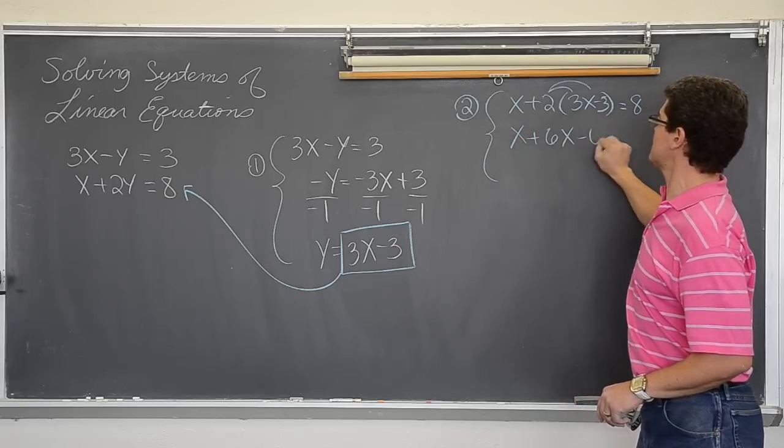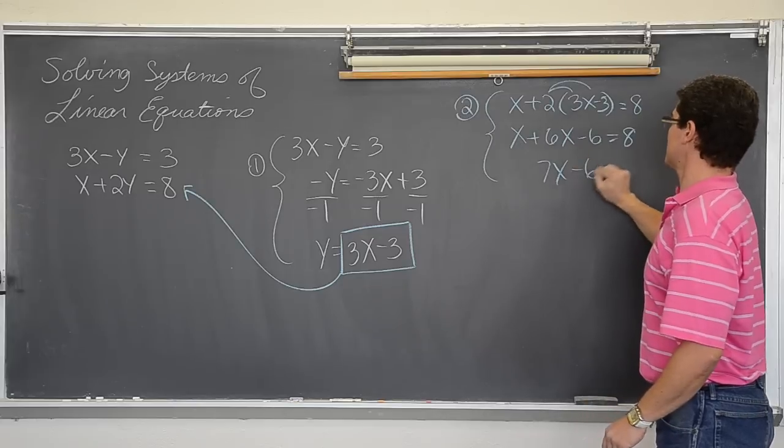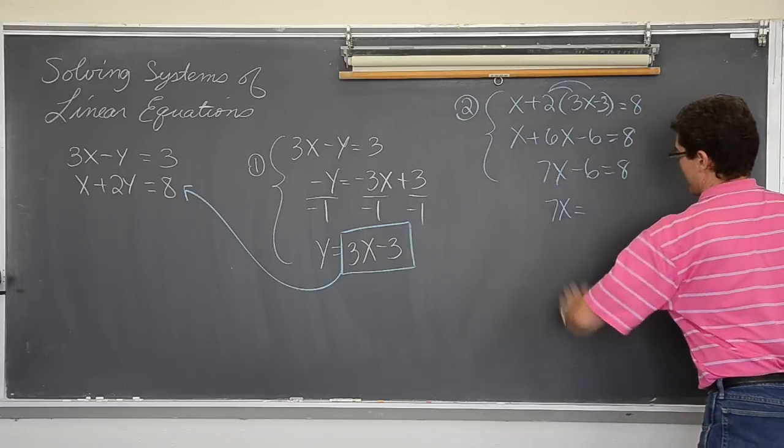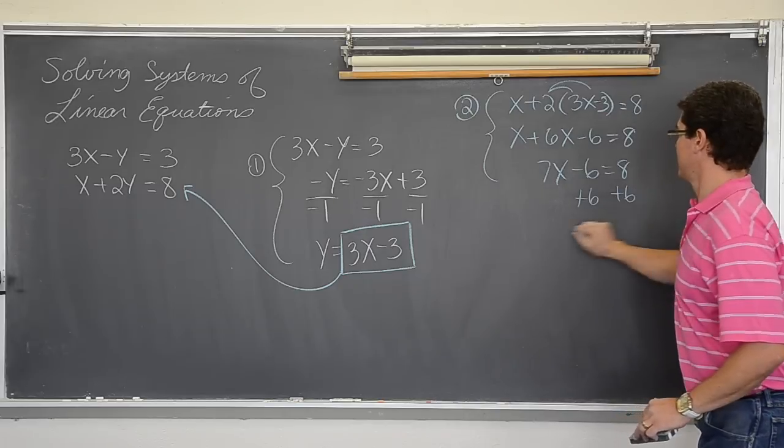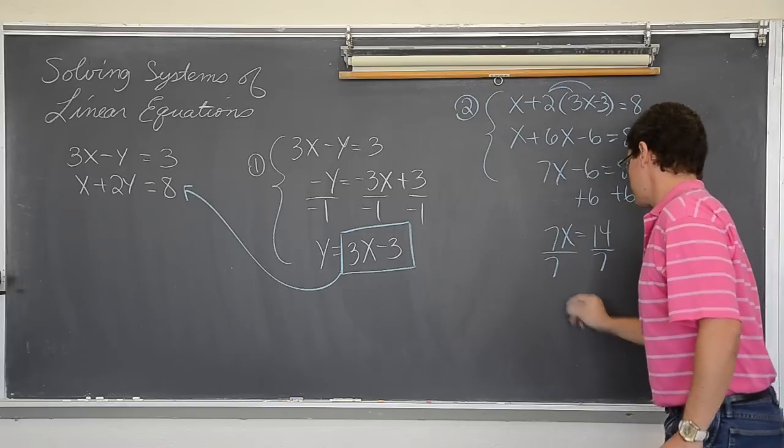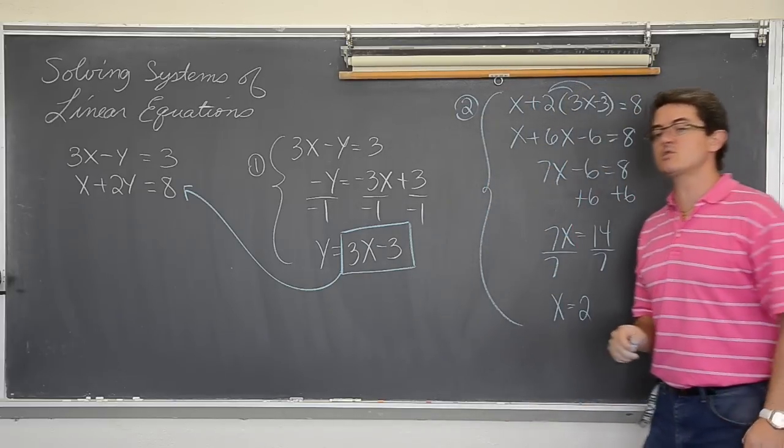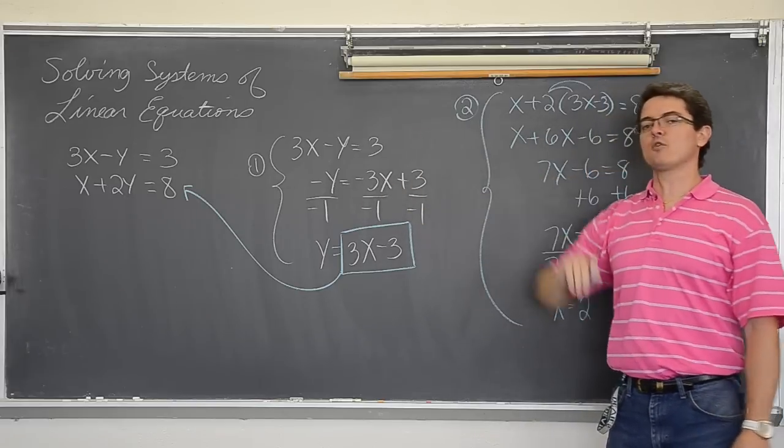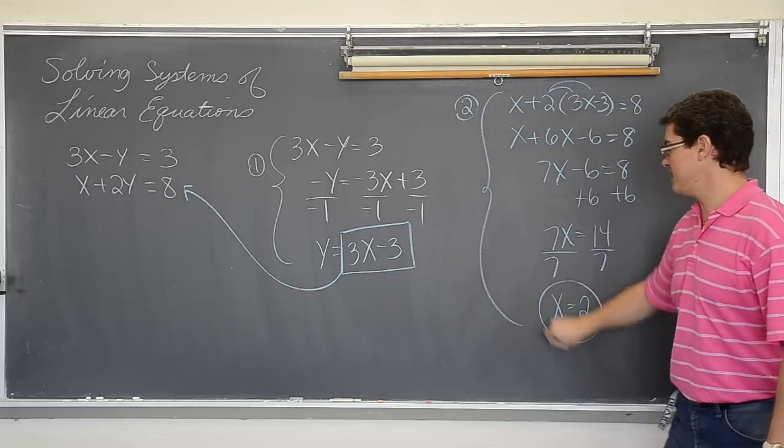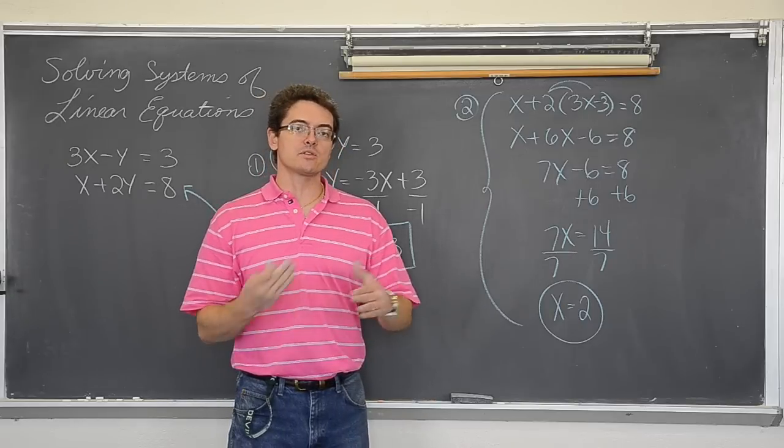I am going to solve this for the remaining variable which in this case is x. So that is going to involve getting the distributive property going. x plus 6x minus 6 equals 8. Combine like terms if you have got them. 7x minus 6 equals 8. I am going to add 6 to both sides and 7x equals 14. Divide by 7 and x is equal to 2. So this is my second step of doing the substitution method. Get one equation and solve for one of the variables. Plug that into the other equation that you have not worked with yet and find half of your solution.